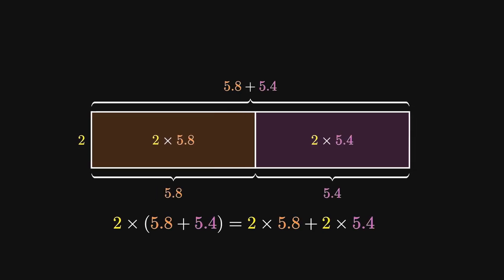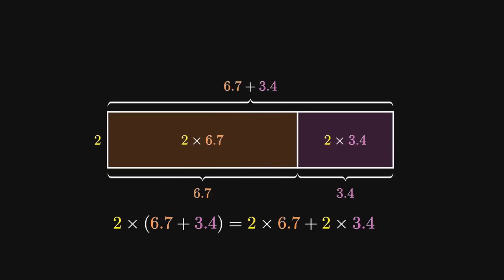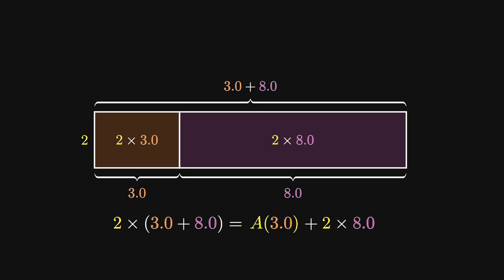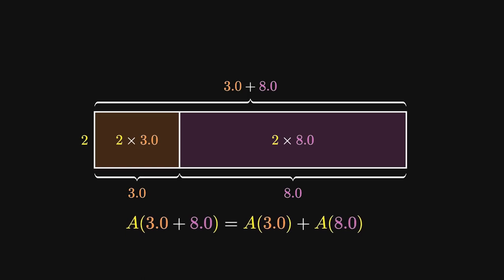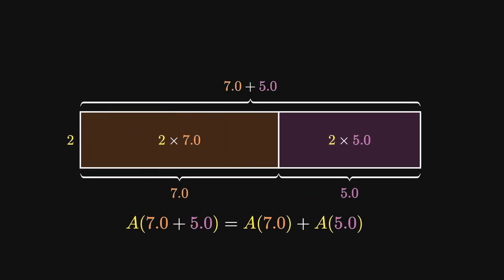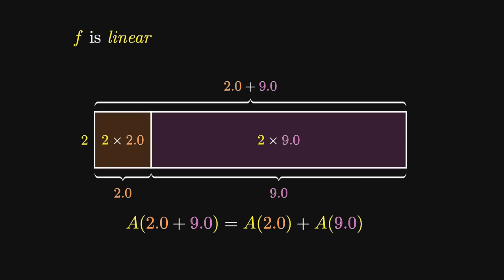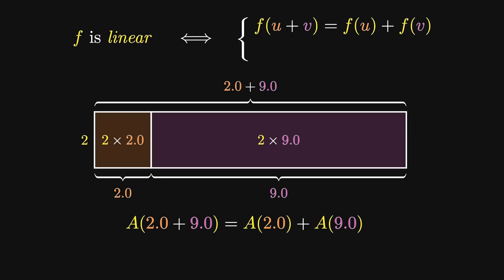As we allow the various lengths to change, the left hand area and the right hand area should remain the same. Let's relabel the area of the orange rectangle as A of 3, and the area of the pink rectangle as A of 8. This also means that the area of the total rectangle is A of 3 plus 8. The key idea is that no matter which lengths we choose, the equation should still remain the same, meaning that the area is able to split up addition. This gives us the first condition for a function f to be linear: if it can split up addition, f of u plus v should equal f of u plus f of v.